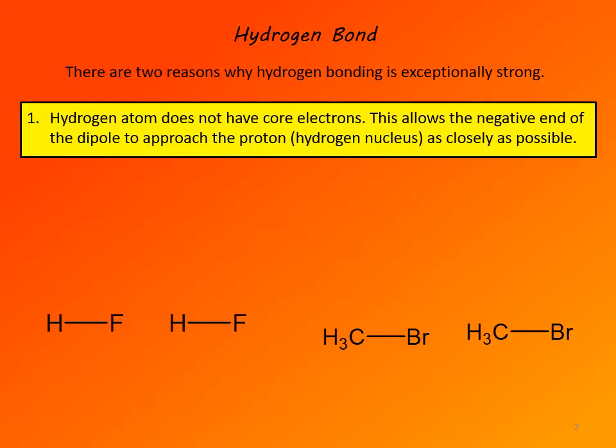Hydrogen bond is a form of dipole-dipole interaction. Strictly speaking, looking at hydrogen bond, it is a dipole-dipole interaction. But compared to other dipole-dipole interactions, it is very strong — much stronger compared to an ordinary dipole-dipole interaction. For that reason, it is classified separately as a distinct intermolecular interaction. An average hydrogen bond is about 100 times stronger compared to an average dipole-dipole interaction. There are two reasons why hydrogen bond is so exceptionally strong.